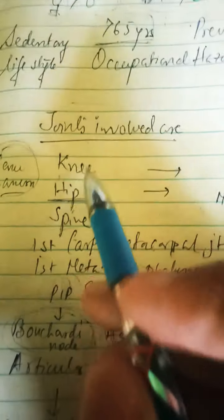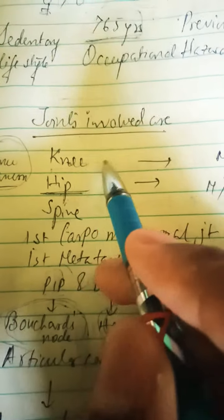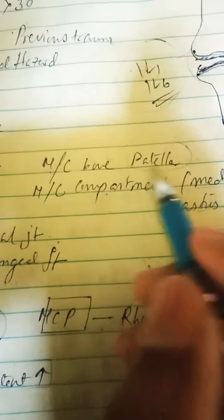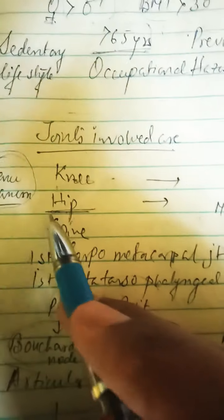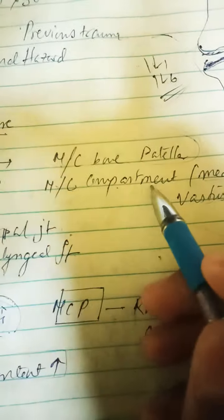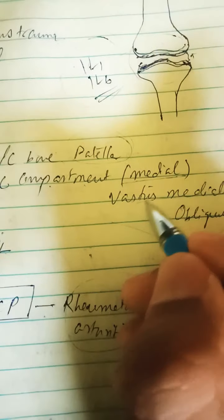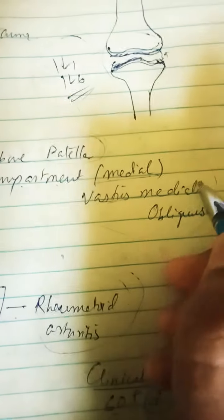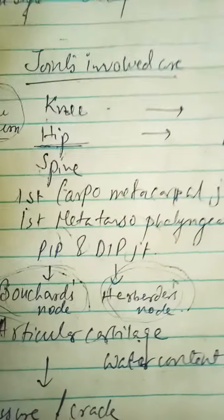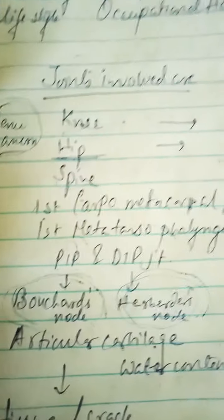The joints mainly involved are: the knee joint, where the most common bone involved is the patella; the hip joint, where the most common compartment is the medial compartment and the vastus medialis obliquus muscle is involved; and the spine — the lumbar spine or cervical spine can also be involved.